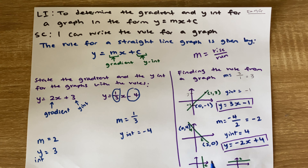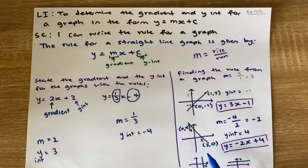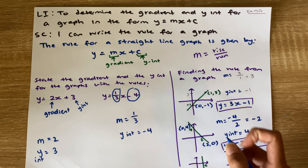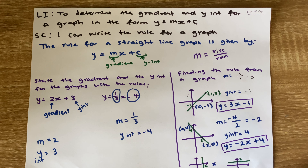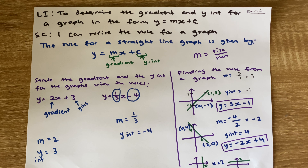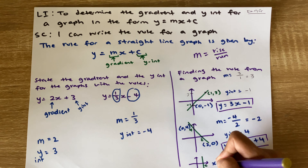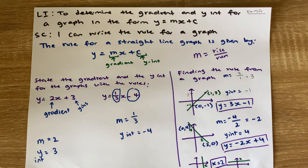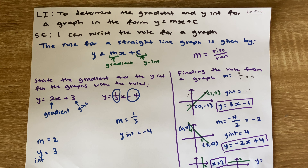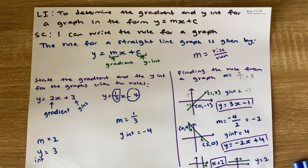Over here we have a vertical graph and a horizontal graph, and the rule for these is slightly different — a little bit easier. I can see that my vertical graph is crossing the x-axis at the value 2, so the formula is simply x equals 2. For the horizontal graph, I see it's crossing the y-axis at the number 2, so this one is y equals 2.